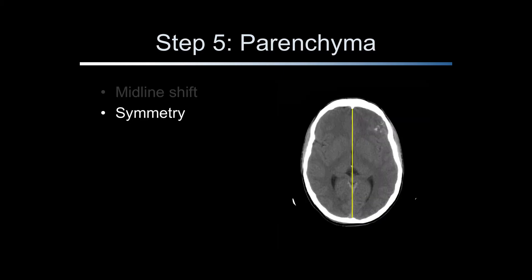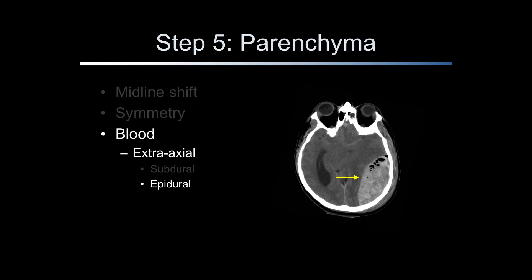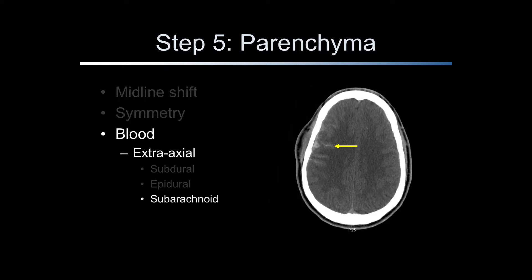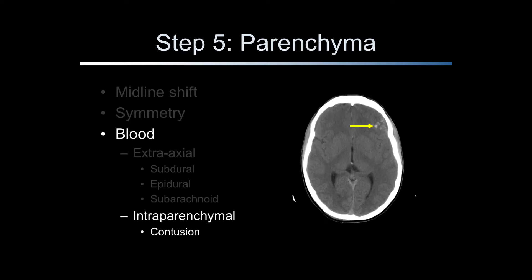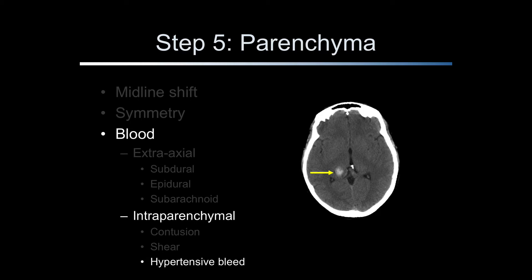Symmetry is defined as the correspondence in size, form, and arrangement of parts on opposite sides of a plane. Normal cerebral hemispheres should be fairly symmetric. Asymmetry suggests pathology or the patient may have their head tilted in the scanner. Blood in the head can be extra-axial, meaning it does not accumulate within but outside of the brain parenchyma, or intra-parenchymal, meaning the blood accumulates within the brain tissue itself. Extra-axial blood includes subdural bleeding, epidural bleeding, and subarachnoid blood, which can be traumatic or aneurysmal in origin. Blood can also be intra-parenchymal, which includes contusions, shear hemorrhage, bleeding from hypertension, tumor, infarction, or coagulopathy.